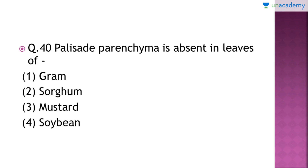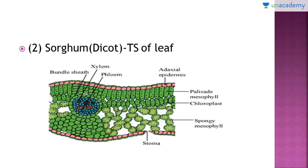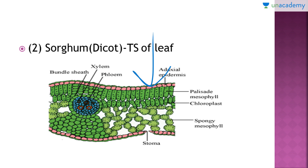The next and last question: palisade parenchyma is absent in leaves of which of the following? Again, you just have to guess whether the plant is monocot or dicot to answer. The right answer is option number two, that is sorghum — sorghum is a monocot plant and the rest are dicots. Here you can see the transverse section of a leaf; these tall and parallel cells are called palisade cells. They are present in dicot leaves to prevent the absorption of an extra amount of light, and they have more chloroplast to undergo photosynthesis.